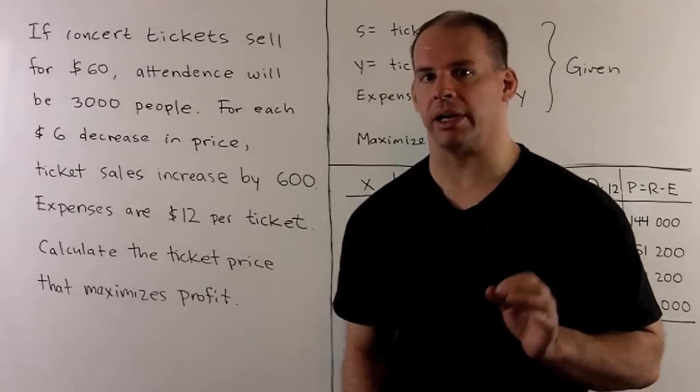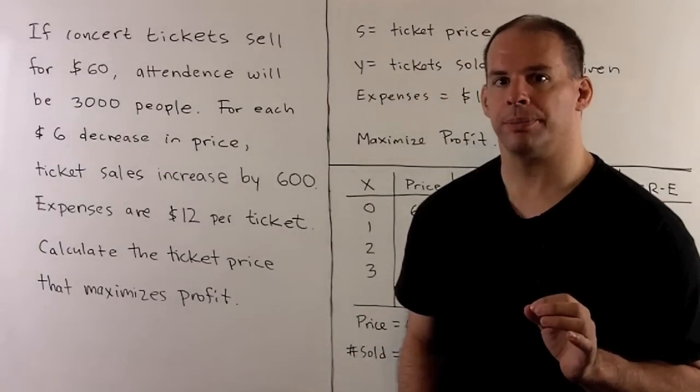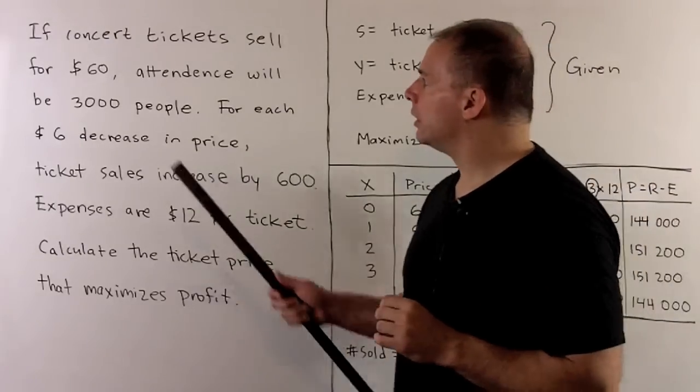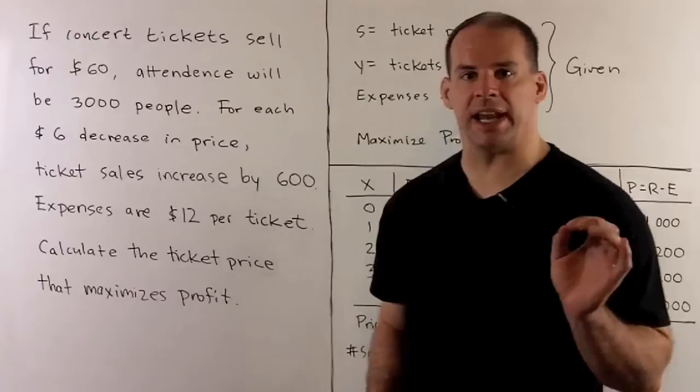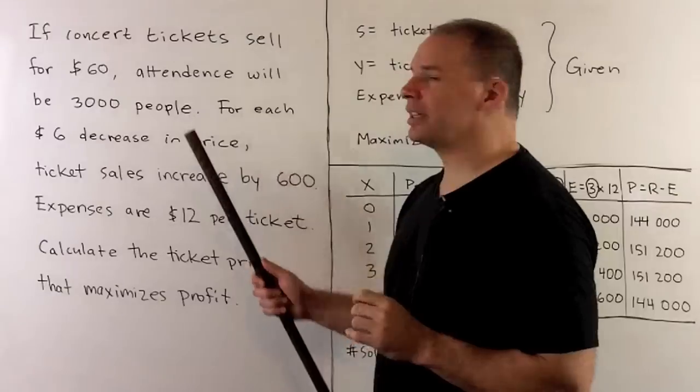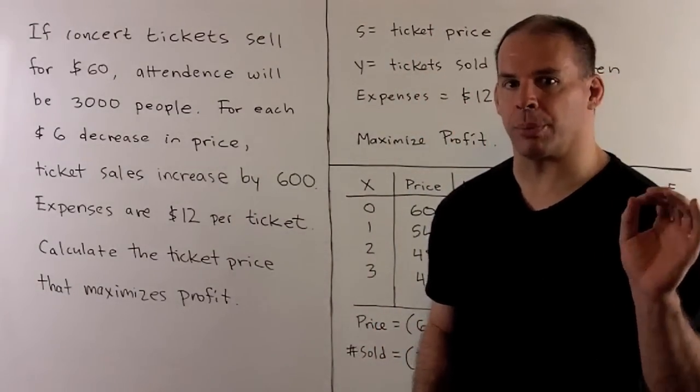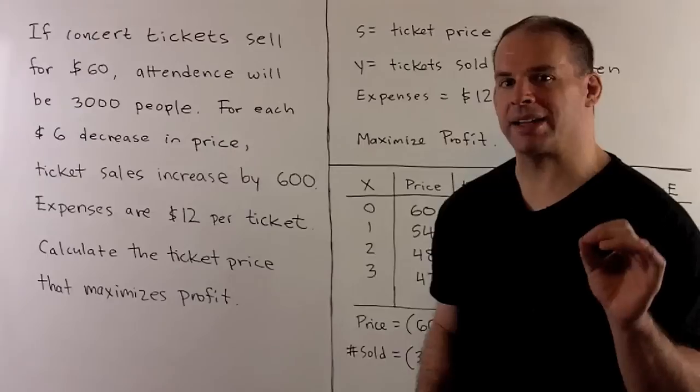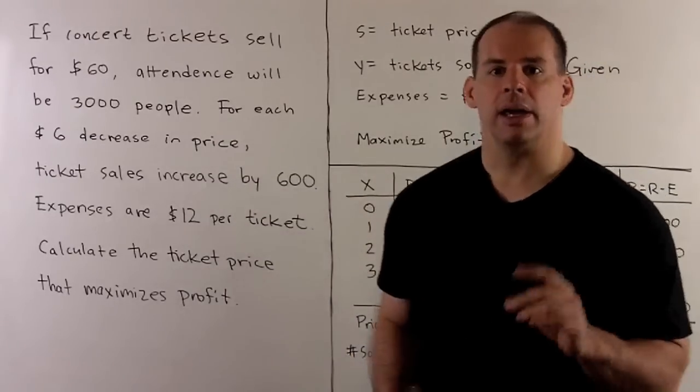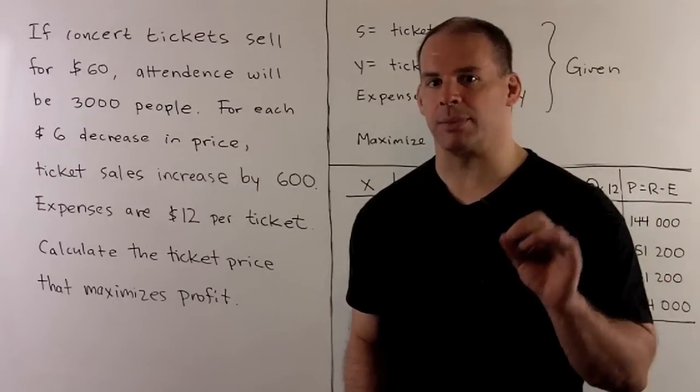Here's an optimization problem from economics. We're selling tickets at a concert and want to maximize our profits. If we set our ticket price at $60, we can expect attendance of 3,000 people. For every $6 decrease in price, we can expect to increase attendance by 600. Expenses are $12 per ticket. Calculate the ticket price that maximizes profit.